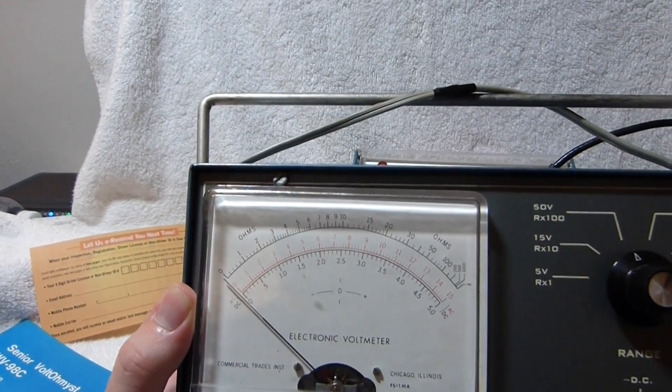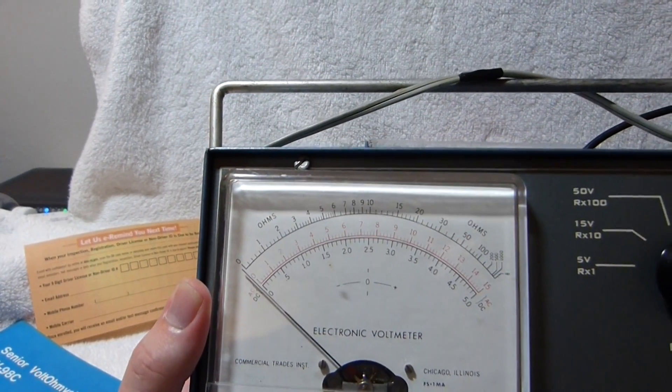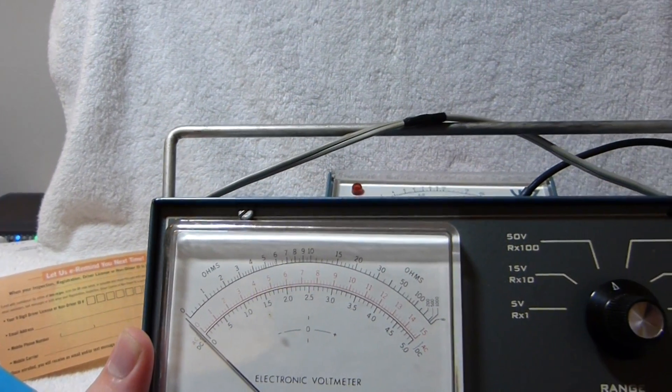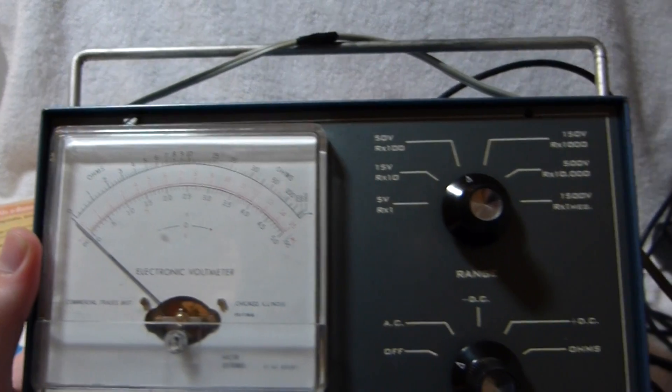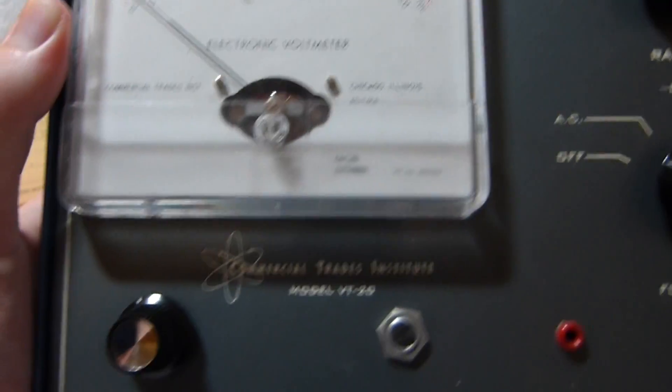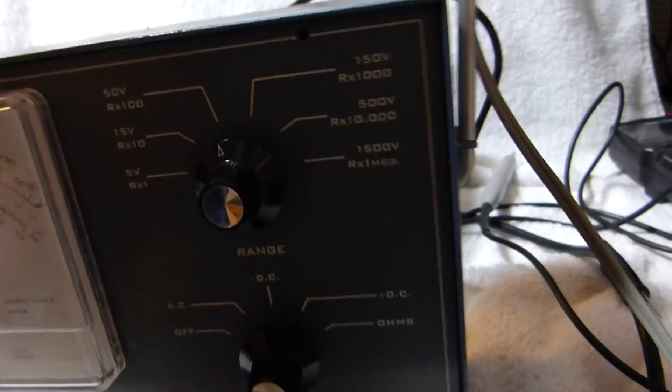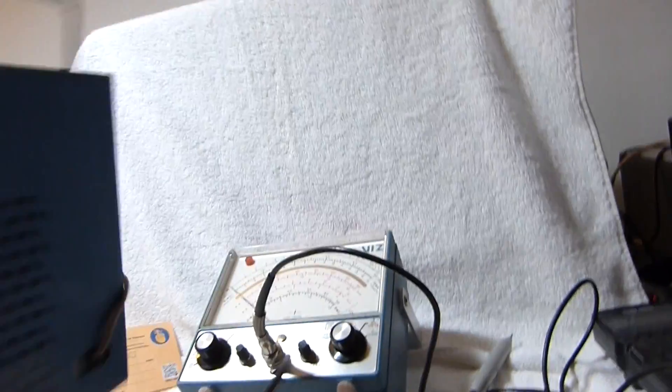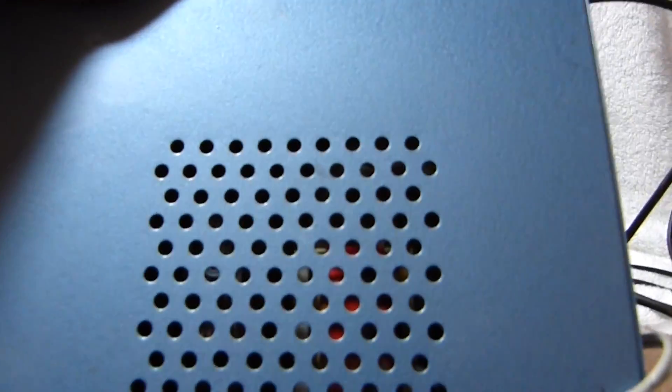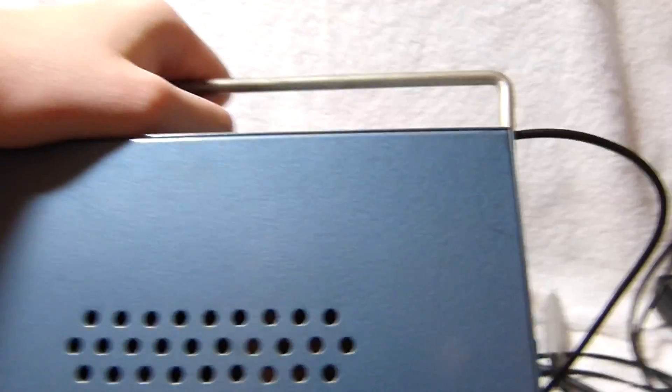There's a ton of kit built VTVMs available on eBay. It was a popular Heathkit and a bunch of other brands. This is from the Commercial Trades Institute. It's a two tube set just like the other one is.